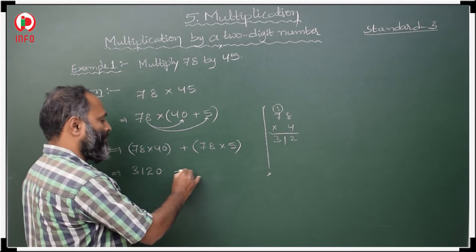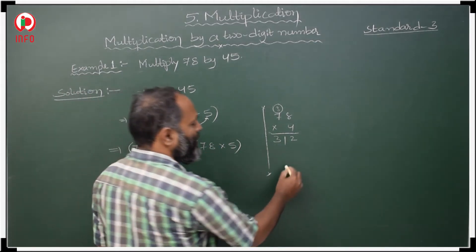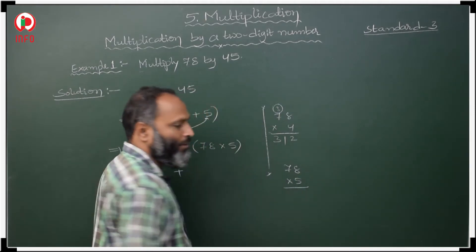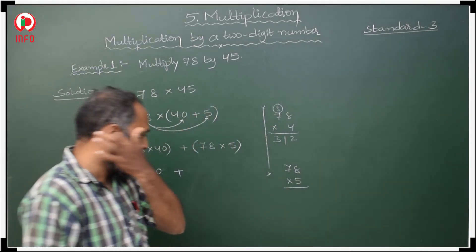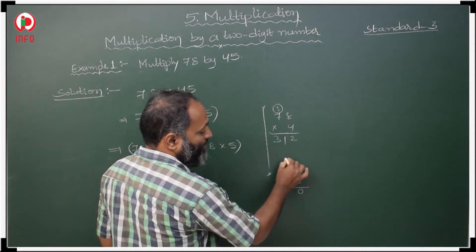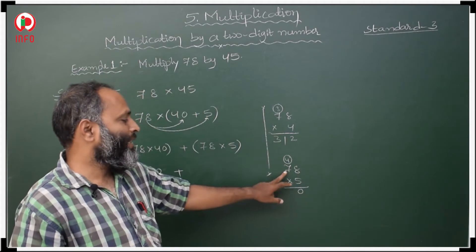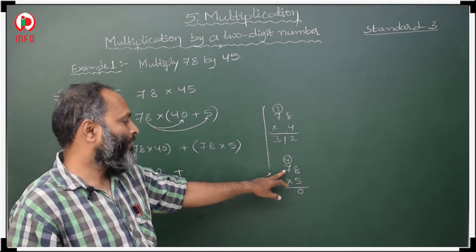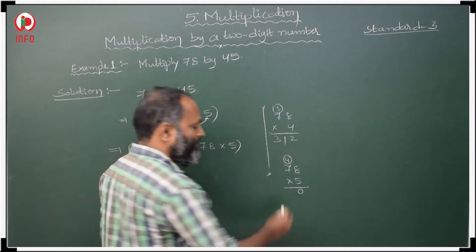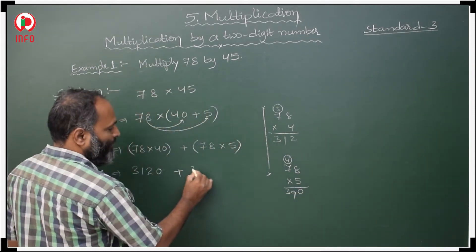Then after that plus 78 into 5. We have to multiply with 5. 5 eights are 40, write 0, carry 4 tens. 5 sevens are 35, 35 plus 4 is 39. That is 390.